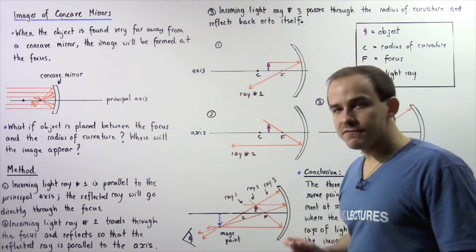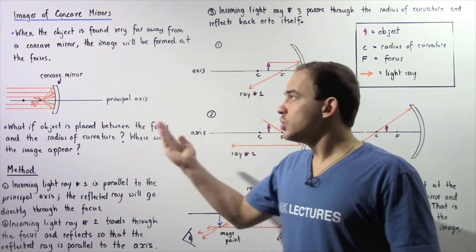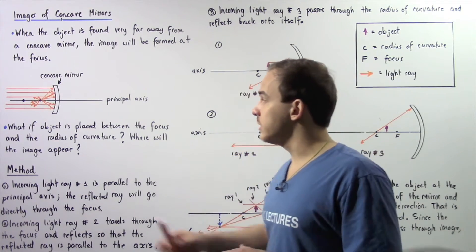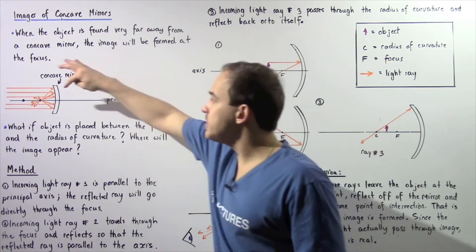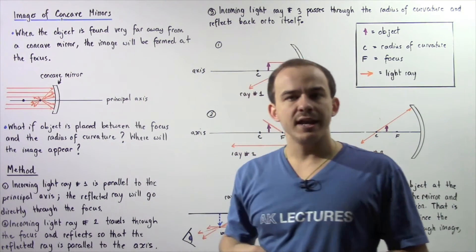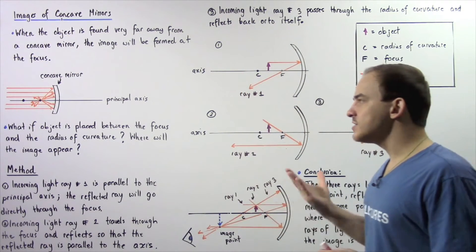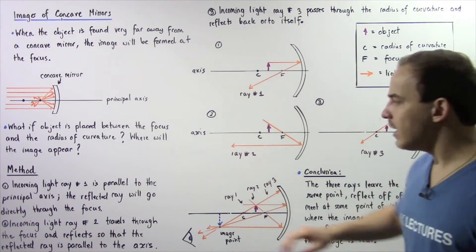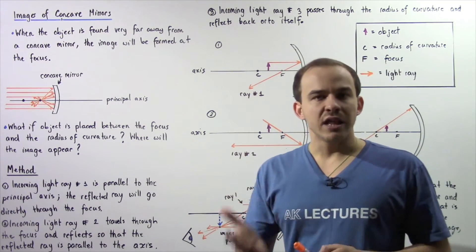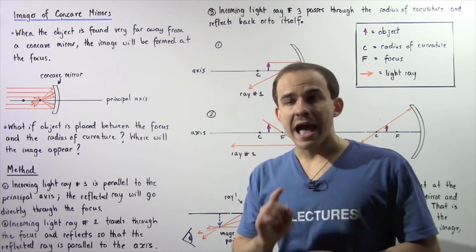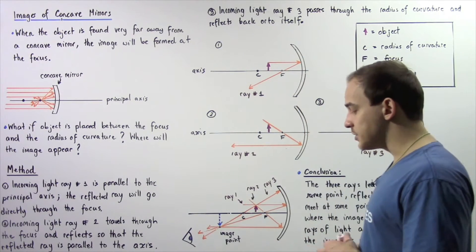What if we take our object and bring it closer to our concave mirror? Specifically, what happens if the object is placed between the focus and the radius of curvature — where will the image form? To answer this question, we have to follow a specific procedure. This method will essentially allow us to find where our image is formed for concave as well as convex mirrors.